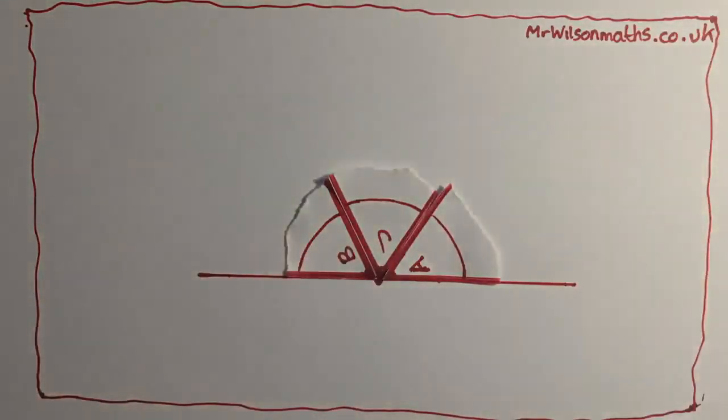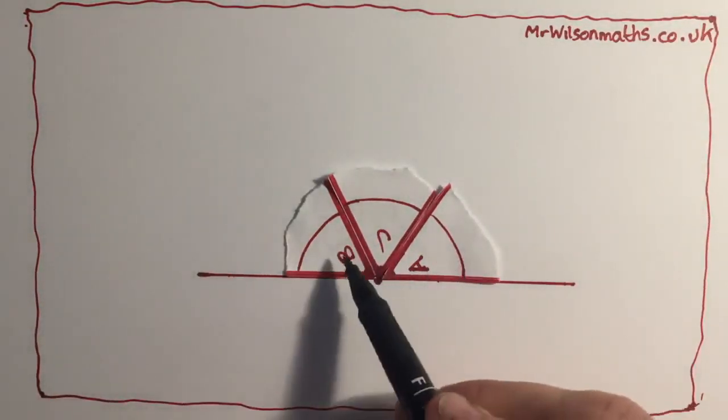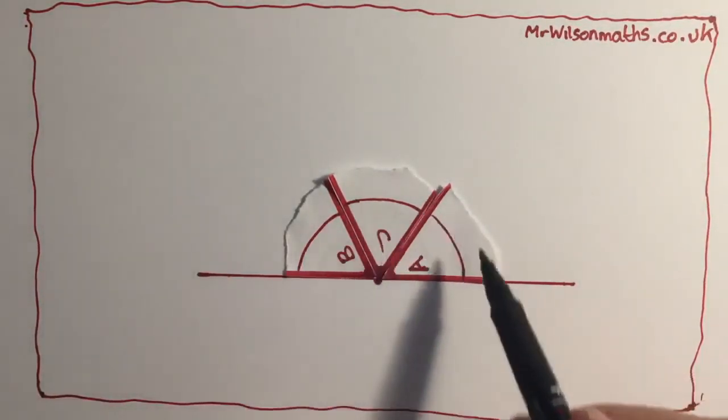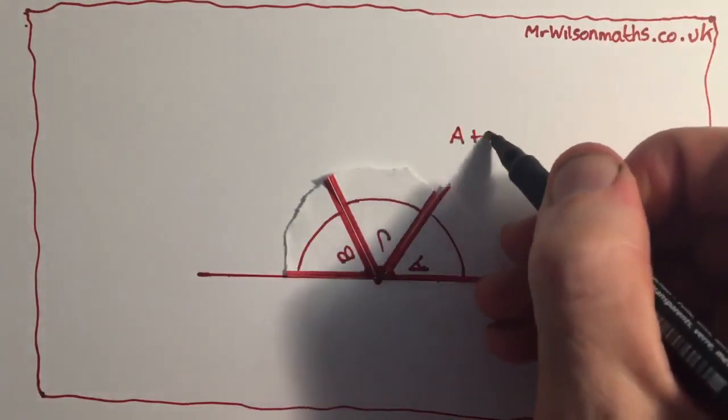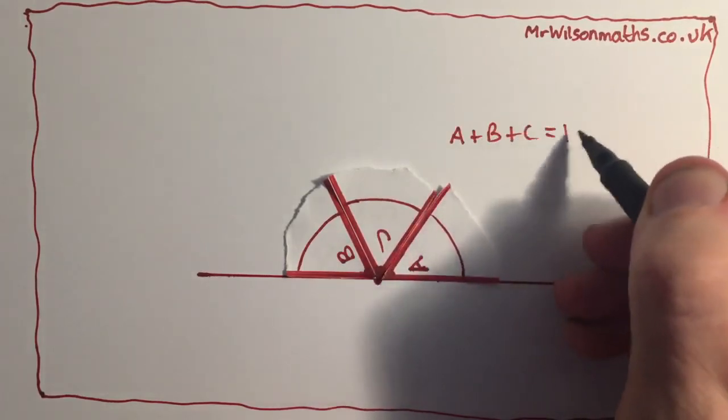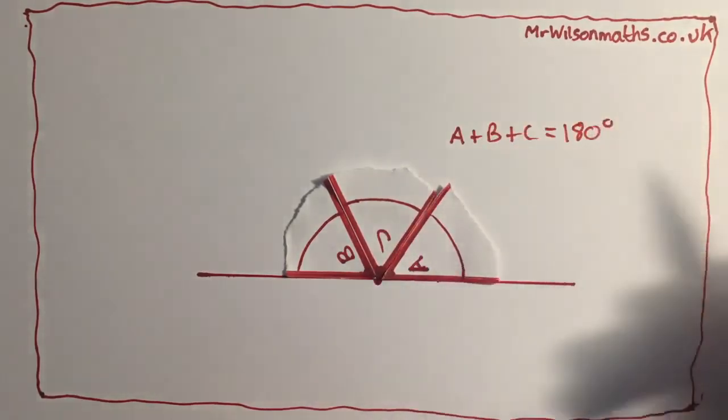And can you see what has happened? A plus B plus C equals 180 degrees. So A plus B plus C equals 180 degrees.